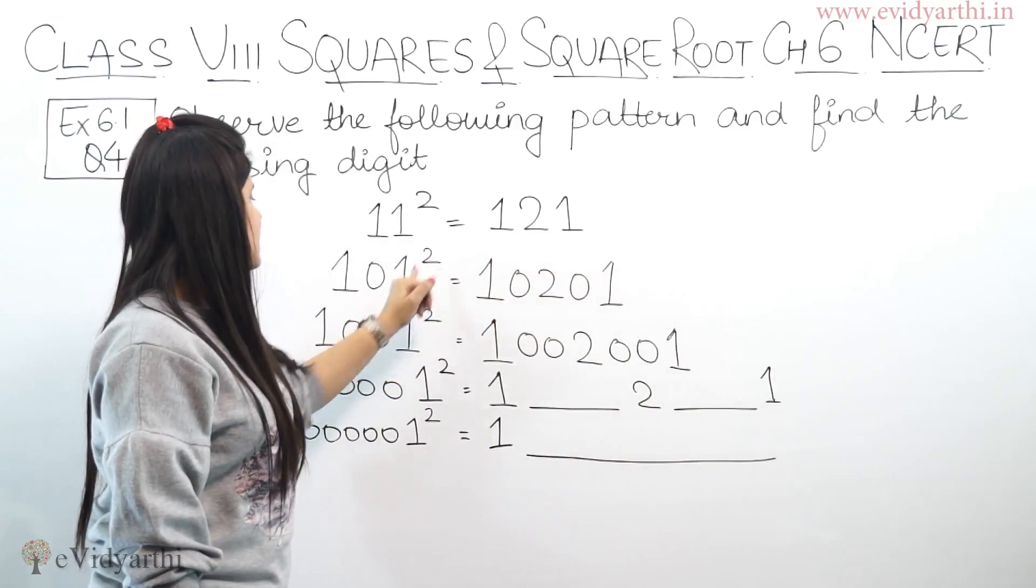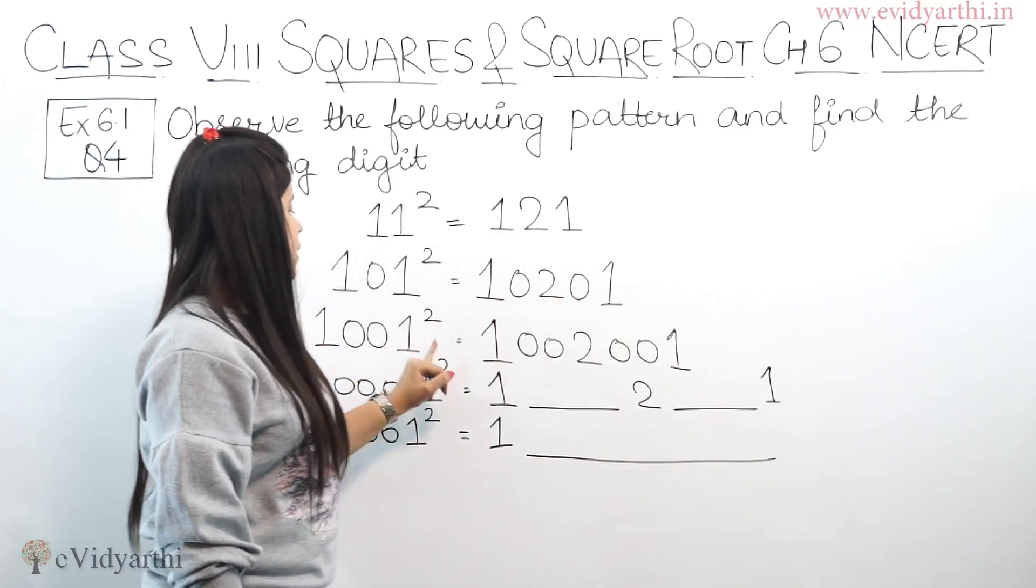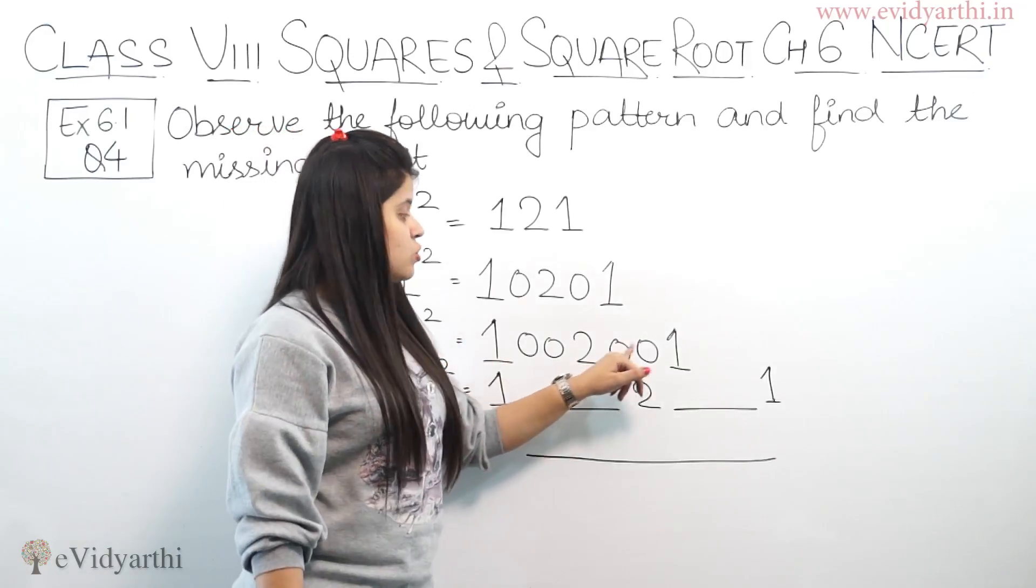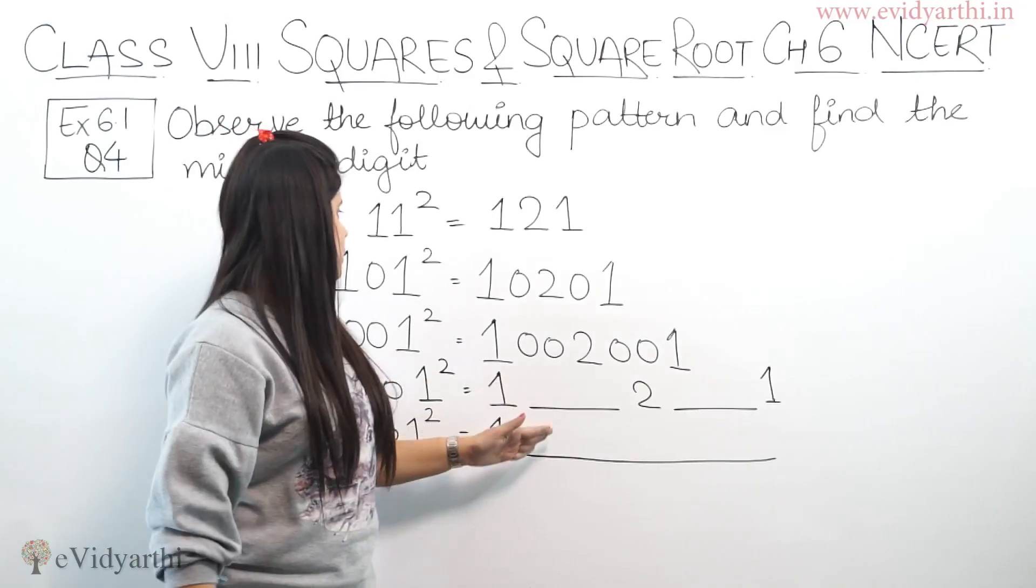Next, 101 square equals 10201. Next, 1001 square equals 1002001. So now we fill the fourth or fifth.